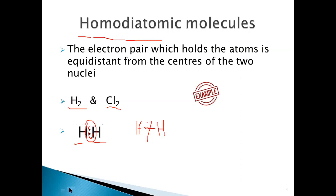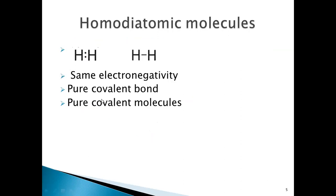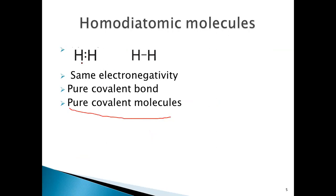These are called homo diatomic molecules, and such molecules are called pure covalent molecules. The bond where the electron pair is shared equally between the two atoms and is at the same distance from the centers of the nuclei is called a pure covalent bond.